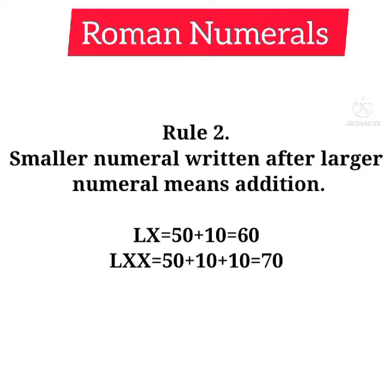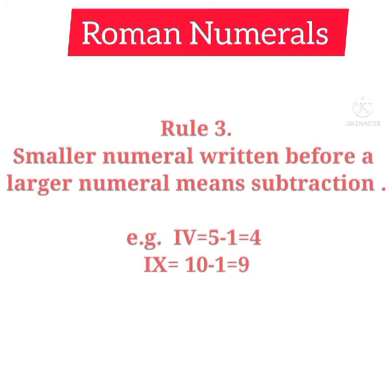Let's take a few more examples to understand Rule 2. LX: L equals fifty and X equals ten, so fifty plus ten equals sixty. LXX: L equals fifty and X equals ten, so fifty plus ten plus ten equals seventy. That is Rule 2 — smaller numerals written after a larger numeral means addition.